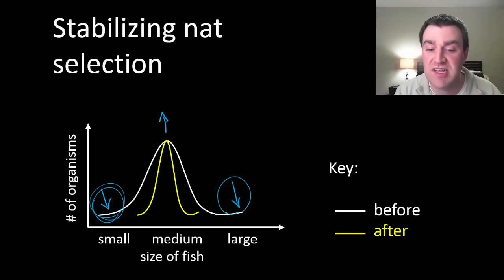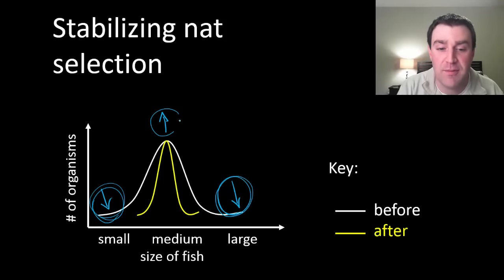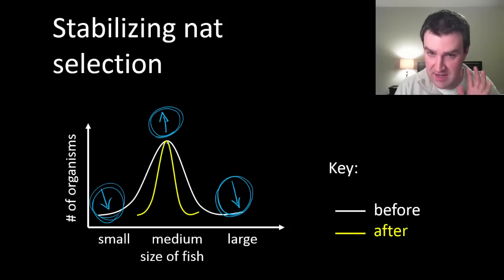If you're also too large as an infant, maybe you have trouble even being born and that threatens both the baby and mom unfortunately. At least before modern medicine, there was a very strong selective force to be kind of intermediate in size so that you could be born in the first place but then also survive outside of mom soon after.